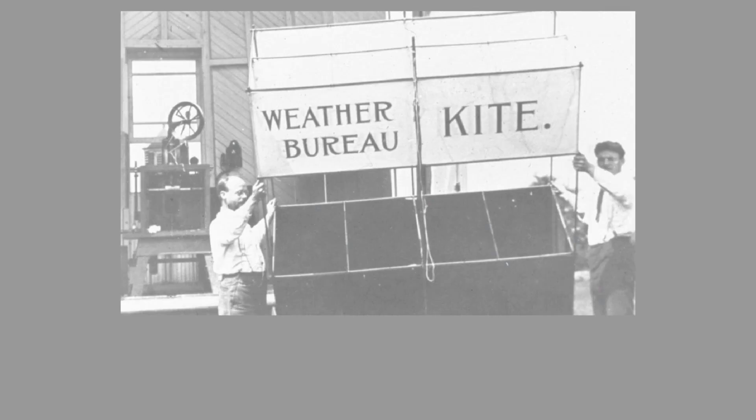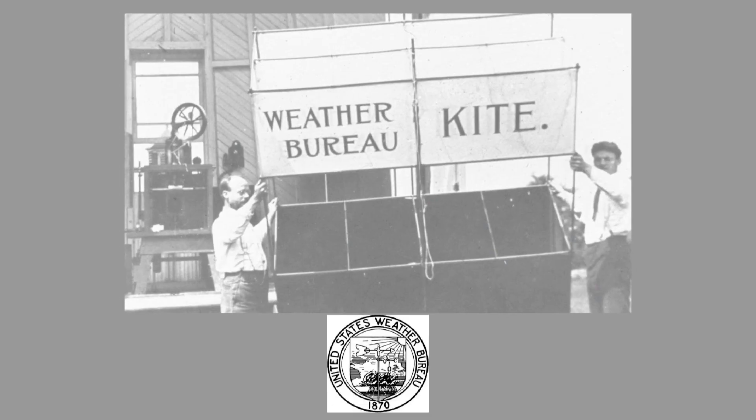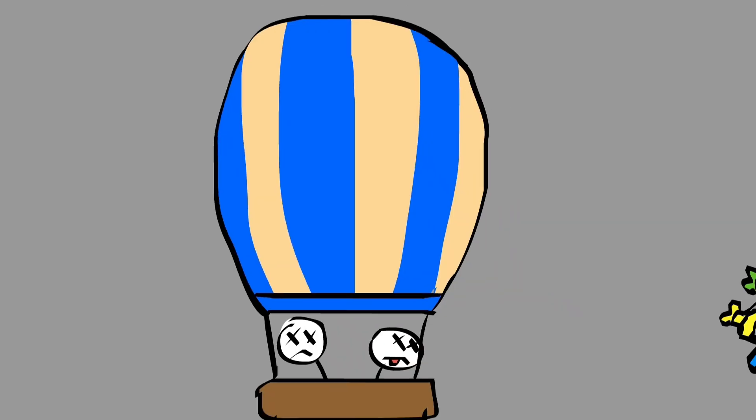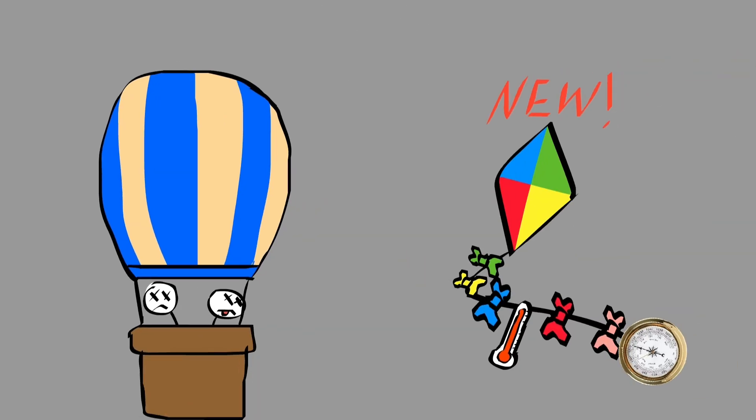A couple of years later, near the end of the 1800s, kite observation stations had finally been established by the United States Weather Bureau. Like the scientists in the hot air balloons, these kites would carry meteorgraphs to document the temperature, humidity, and pressure.